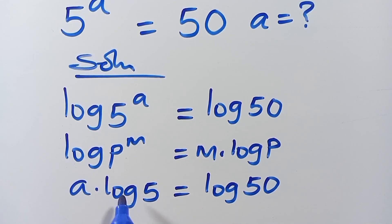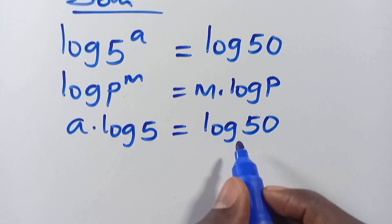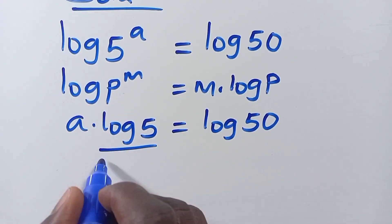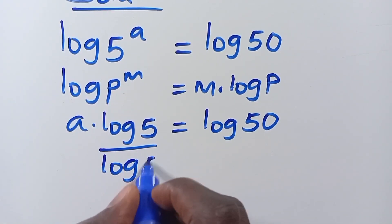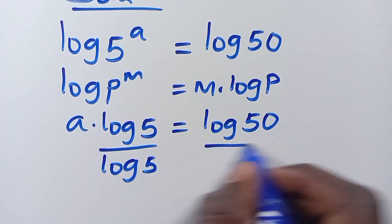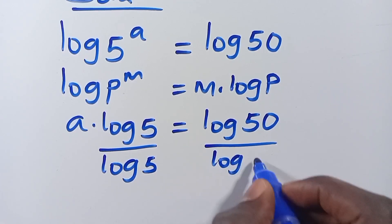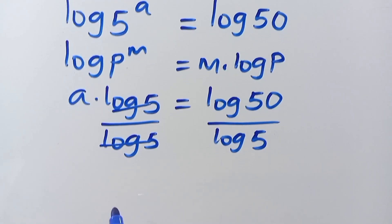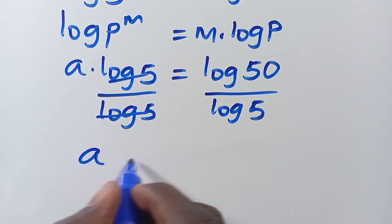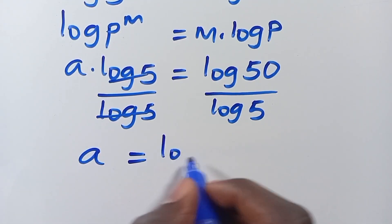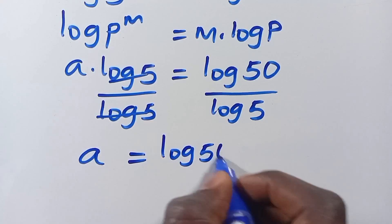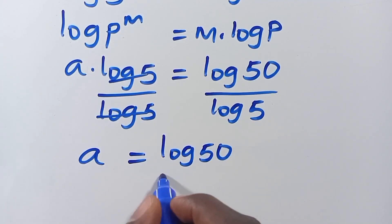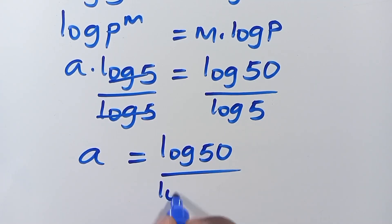So from here, let's divide through by log 5. We divide both sides by log 5, giving us A equals log 50 divided by log 5.